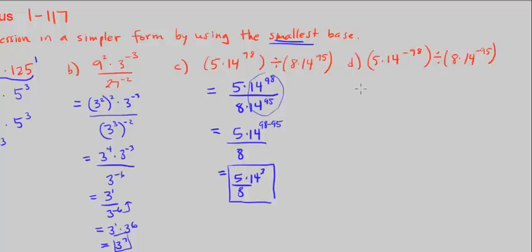Part D is similar to what we just did. Now we have 5 times 14 to the negative 98th power divided by 8 times 14 to the negative 95th power. Remember what negative in the exponent means: we can move it into the numerator or the denominator by switching the power to the opposite. We can move this down by making it 14 to the positive 98th power in the bottom, and move this one up by making it times 14 to the positive 95th.